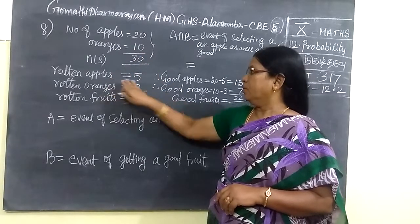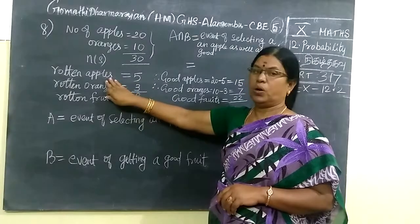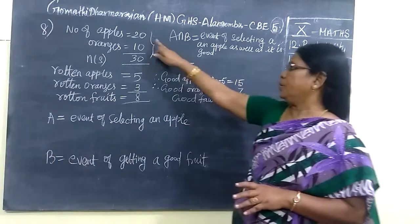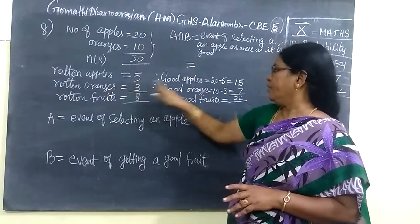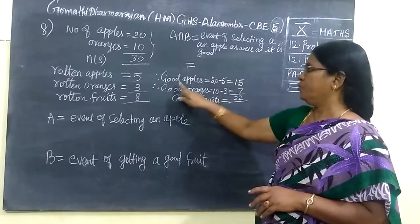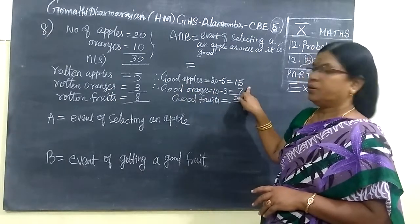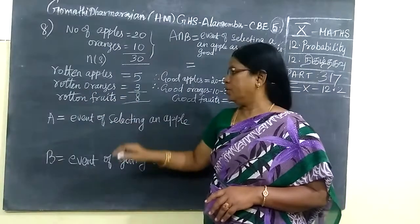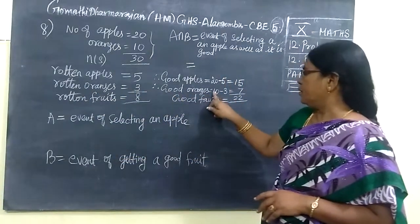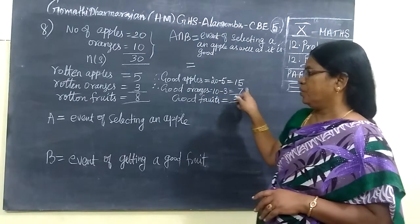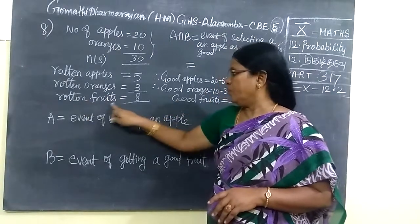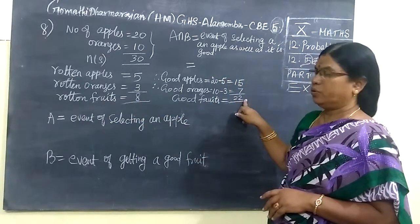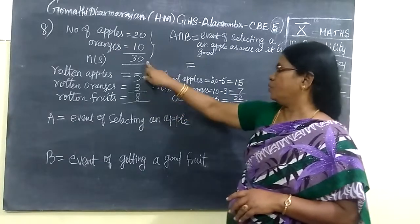In there, 5 apples are rotten. So good apples are 20 minus 5 equal to 15. So number of good apples, 15. Then 3 oranges are rotten. That means good oranges, 10 minus 3 equal to 7. So total number of rotten fruits, 8. Total number of good fruits, 22. So 22 plus 8, totally 30.